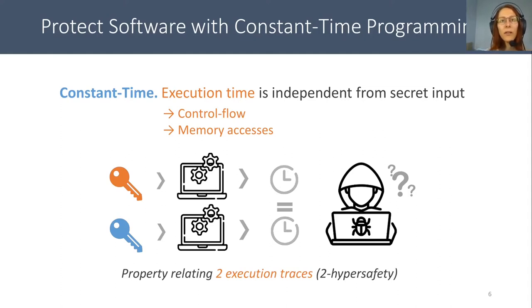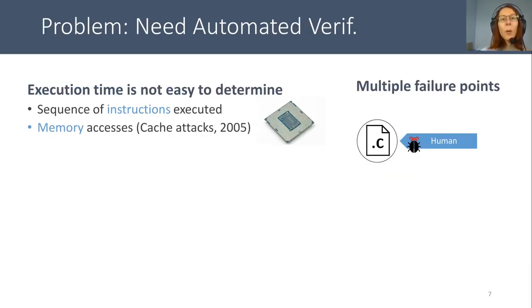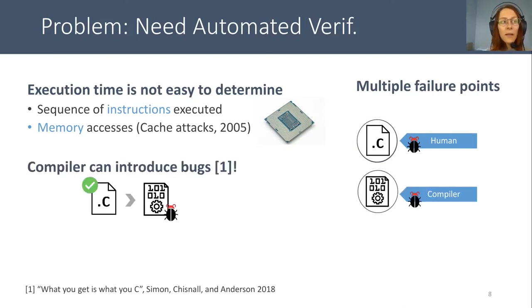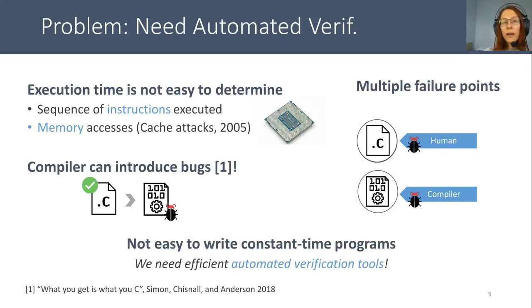Note that this property relates to executions, so it is what we call the 2-hypersafety property. The problem is that constant time programming is not really easy to implement, because you will need to remove any secret-dependent control flow and memory accesses, and so a developer can make mistakes. Second, even if the developer writes constant time programs, the compiler can optimize away the protection and introduce violations in the executable. The conclusion is that we need automated verification tools to verify this property.